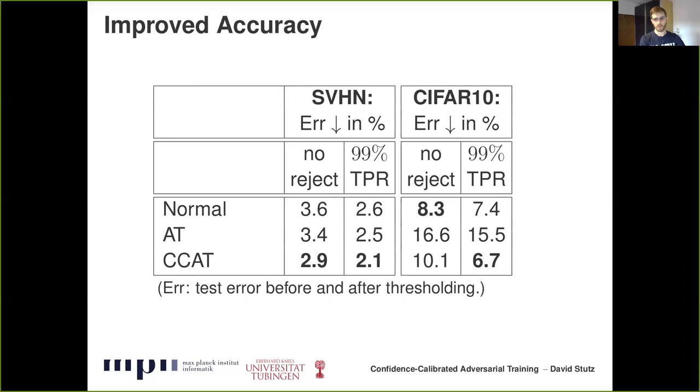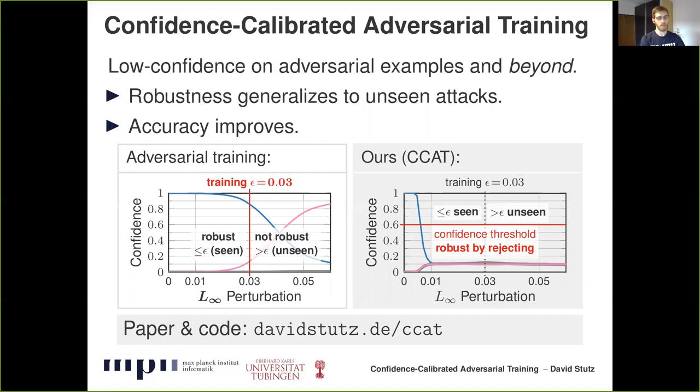Overall, I presented a new approach based on adversarial training to obtain robustness against various different threat models. We train a model to assign low confidence to adversarial examples, and by extrapolating this behavior beyond the epsilon ball used during training, we also obtain robustness against previously unseen attacks. Additionally, accuracy improves and the model holds up against various unconventional threat models. If you're interested, check out the webpage or get in touch.